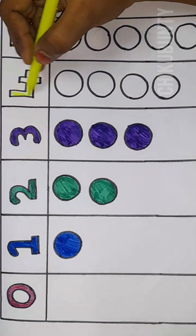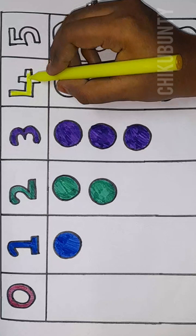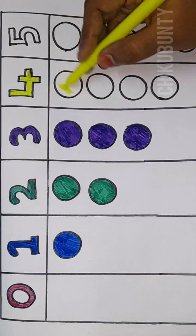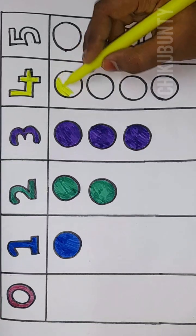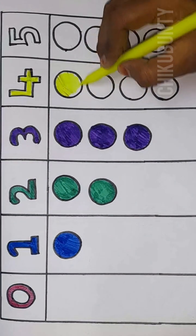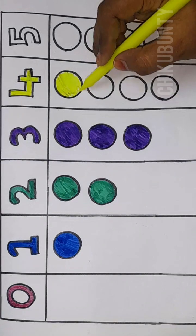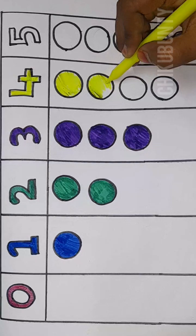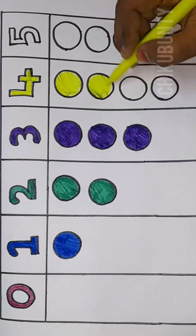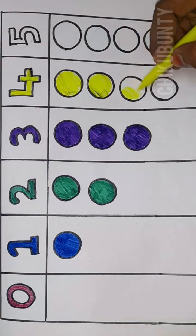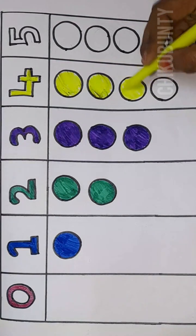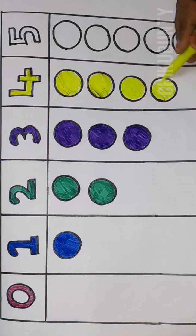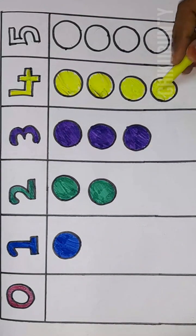Four, yellow color. Four, yellow color. Four yellow color, four circles. One, two, three, four. Four circles, yellow color.